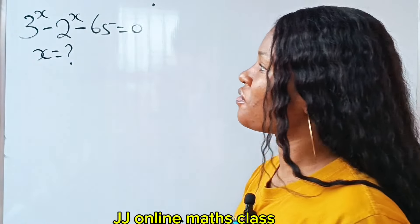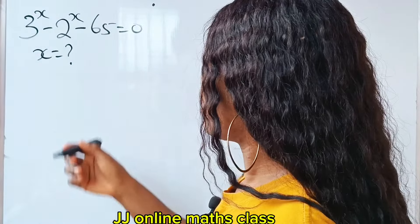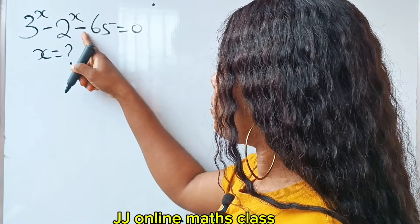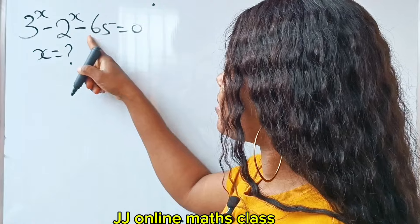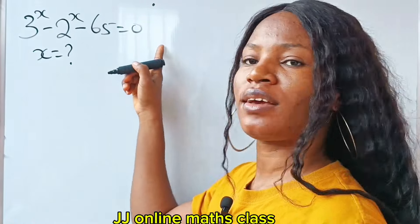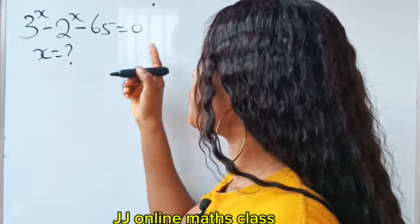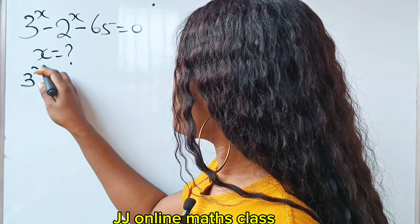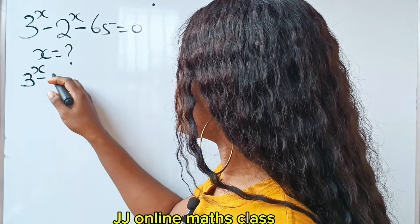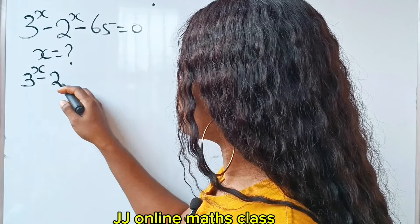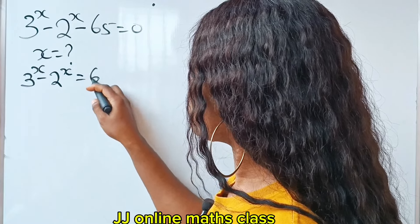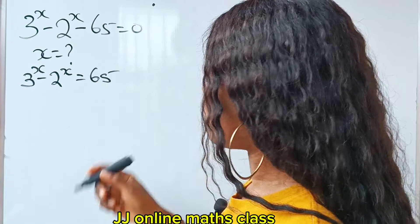Let's solve for the value of x. First, let's transfer this minus 65 to the other side of the equation. So we have 3 to the power of x minus 2 to the power of x is equal to 65.